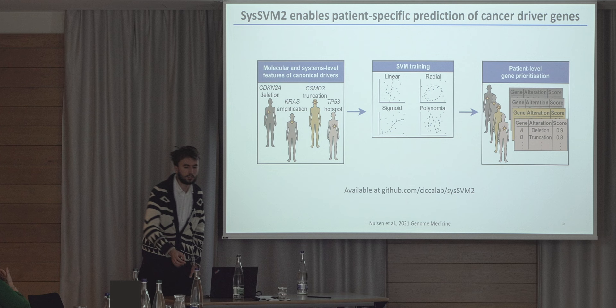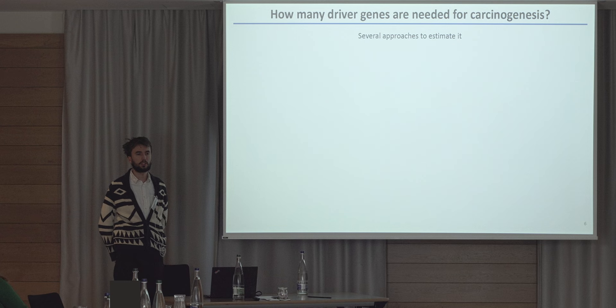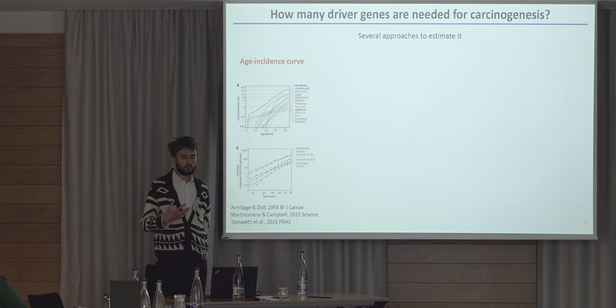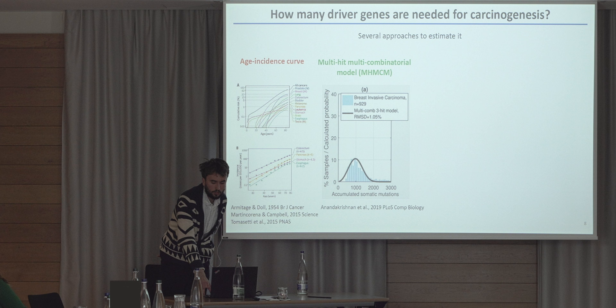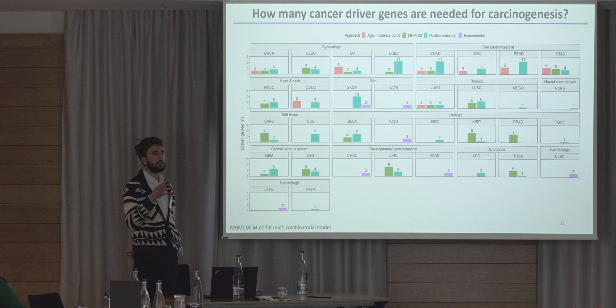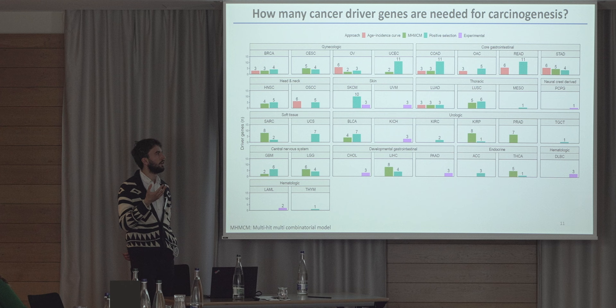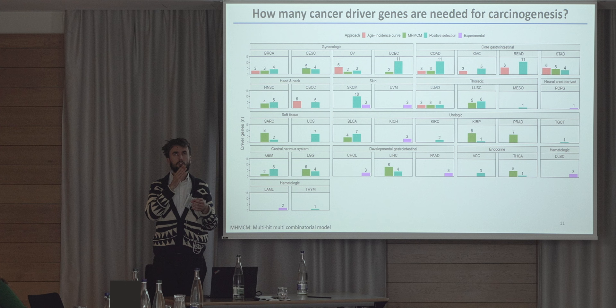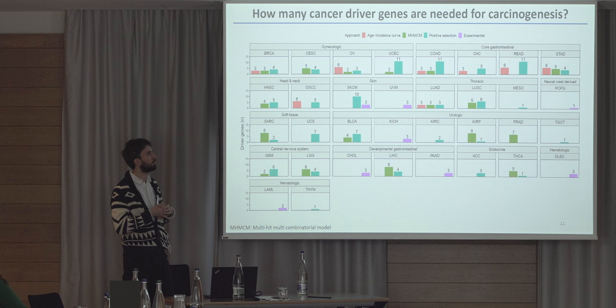We're not the first people to ask this question — there are already several approaches in the literature. Some are based on age-incidence curves, multi-hit combinatorial models, positive selection, and various experimental approaches. We did an extensive literature search, and for each TCGA cancer type we looked at how many cancer driver genes are predicted to be needed for carcinogenesis. For example, in lung adenocarcinoma, all three methods suggest three drivers are needed. But for some other cancer types like head and neck cancers, there is a discrepancy — one method suggests four drivers and another suggests five.